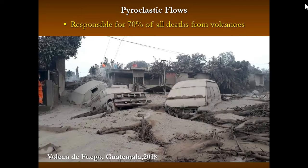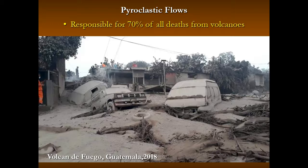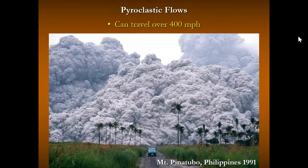Seventy percent of all deaths from volcanoes occur from pyroclastic flows. They come and entomb towns in burning hot ash, making it really difficult to escape. Here's one from an eruption in Guatemala in 2018 to give you an idea of what it's like. Pyroclastic flows can travel over 400 miles per hour. Here's an infamous picture of the pyroclastic flows coming from Mount Pinatubo in 1991.